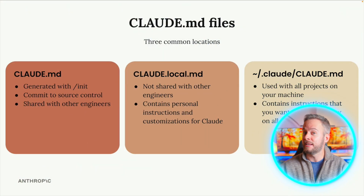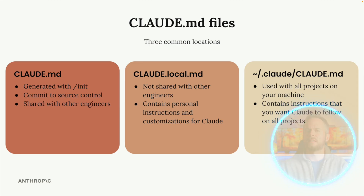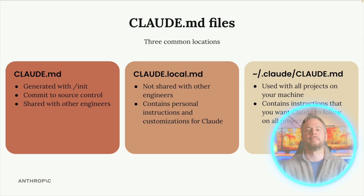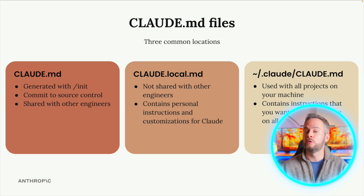Another feature many overlook is memory. You can teach Claude your coding conventions and project rituals by writing them into a claude.md file at the root of your repository. This could include things like use UK English, always write unit tests with new code, or run pnpm test before committing. You can keep global memory and settings in your home directory, or project-specific ones in .claude/settings.json. There's even a local version that isn't committed to git, so you can have personal tweaks without polluting the repo.